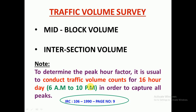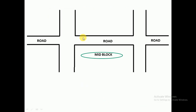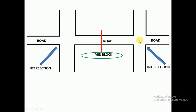These details are available in IRC 106-1990, page number 9. This is the typical section of the road. All roads have intersections; in between one intersection to another intersection, we have a road — this road we call a mid-block section. When we carry out the Traffic Volume Survey in this mid-block section, we call it a mid-block volume survey. When we carry out the Traffic Volume Survey at an intersection, we call it an intersection Traffic Volume Survey.